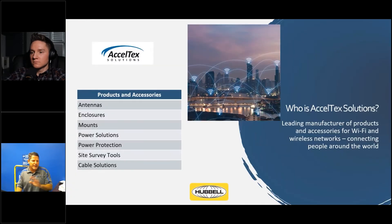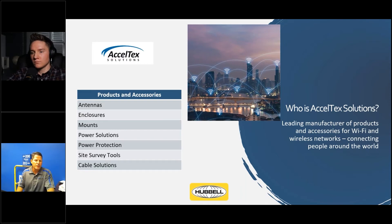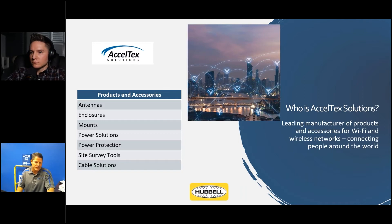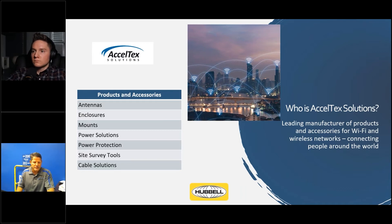A little bit about AccelTex. You guys may know us. We sell a lot of ancillary products that work with all the radio manufacturers, which is great. Our biggest line by far is antennas. We got acquired by Hubble, which is going to be a great partnership — they bring a lot of size and horsepower and a lot of experience on the electrical side, with a really big focus now on networking. But I don't want to focus on who we are right now; I'm going to focus on the product.